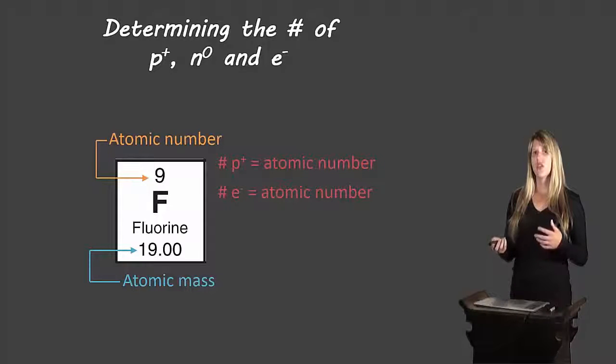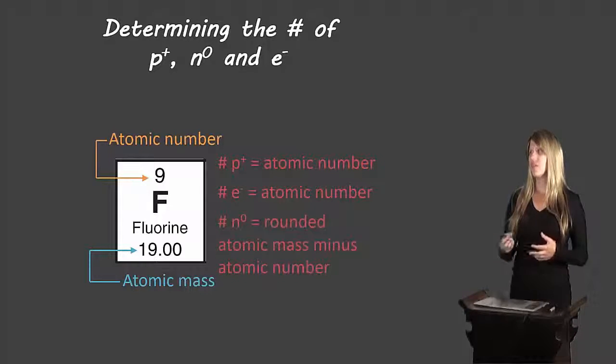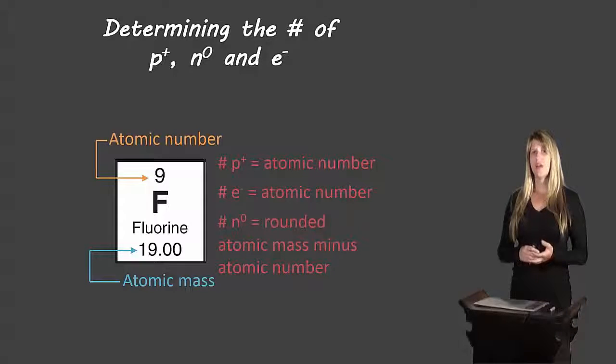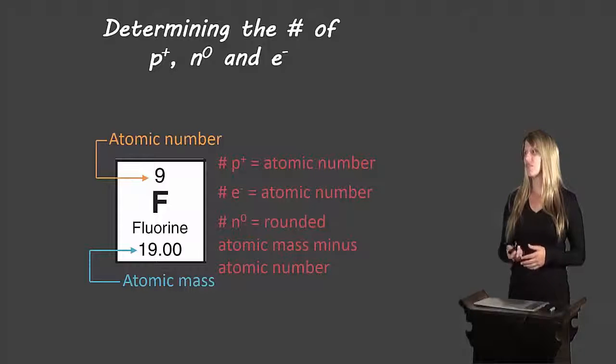To find the number of neutrons, we do a little bit of math. So we take the rounded atomic mass and subtract the atomic number to find the most common number of neutrons in that atom. So for the example of fluorine, if we round 19.00, we get 19. And if we subtract nine from 19, we get 10. So there are 10 neutrons in fluorine.